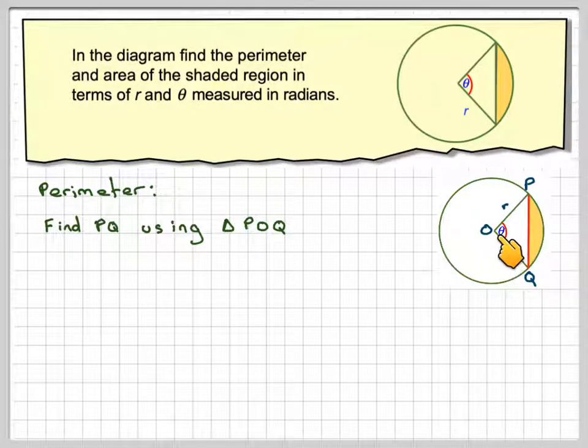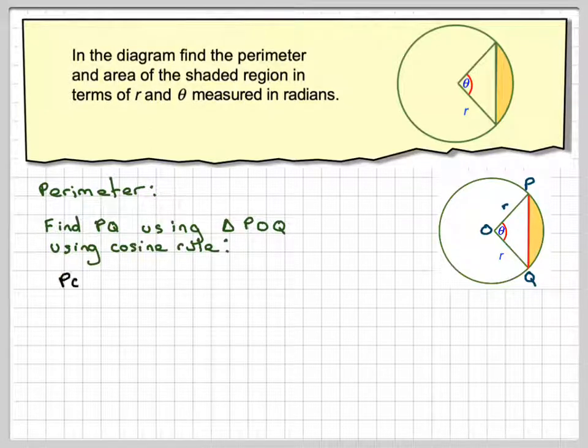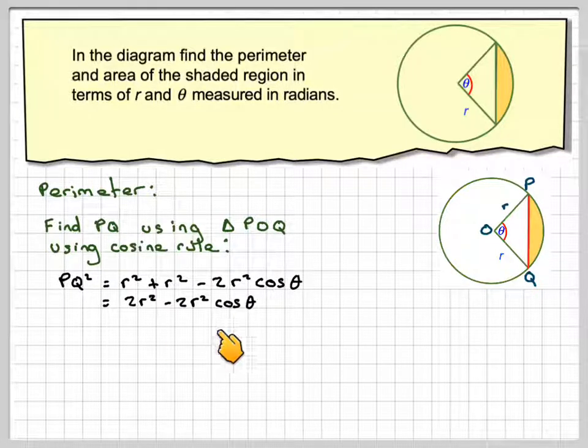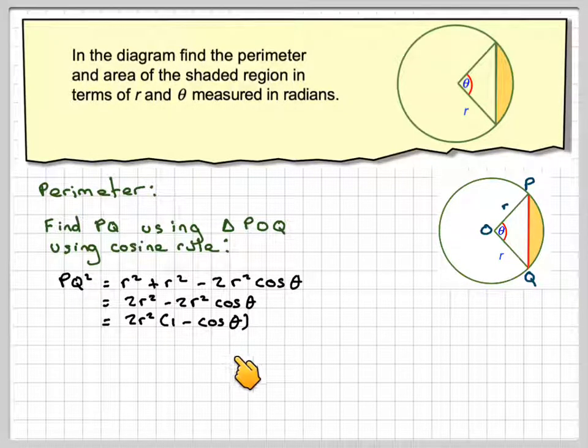We've got two sides and the included angle, so we'll use the cosine rule. PQ squared equals R squared plus R squared minus 2R times R, which is 2R squared, times the cosine of the angle. The angle is measured in radians, so that's going to give me 2R squared minus 2R squared cos theta. Common factor 2R squared, we'll take that out, we get 2R squared times 1 minus cos theta.